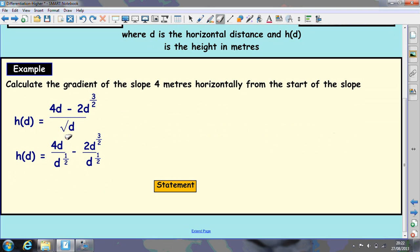We can then subtract our indices. So we've got 4d to the power of 1, if you like. So 1 take away a half is a half. So that's going to go to 4d^(1/2). And then we've got 3/2 take away a half. That just leaves you with 1. So that's going to be take away 2d to the power of 1, which is just 2d.